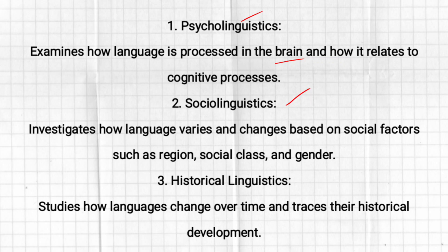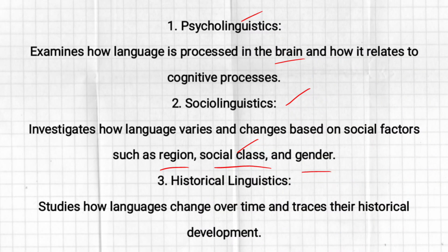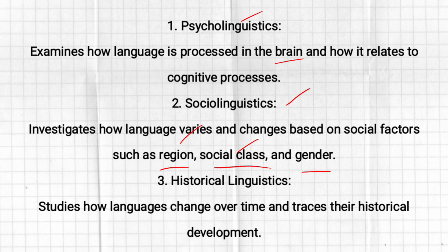The second branch is sociolinguistics. Whenever the word 'social' is used, we are talking about society. Sociolinguistics investigates how language varies and changes based on social factors such as region, social class, and gender. For example, what kind of words are used by males versus females, how language differs across upper, middle, and lower classes, and how accents and dialects vary by region.